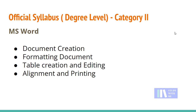What is the first topic? MS Word: document creation, formatting document, table creation, editing, alignment and printing. This is category 2, which is the degree level syllabus. MS Word covers document creation, formatting document, table creation and editing, alignment and printing.